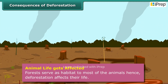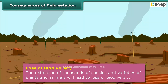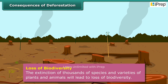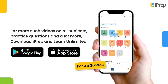Deforestation also affects animal life, since forests serve as habitat to most animals. Loss of biodiversity results from cutting of forests, meaning the extinction of thousands of species and varieties of plants and animals, many of which have never been catalogued scientifically.